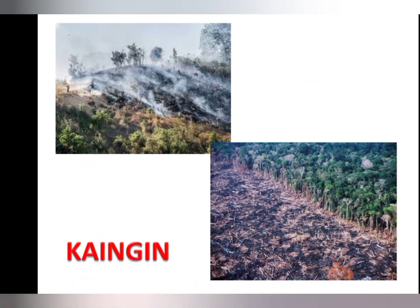Next is the kaingin system. The kaingin system is a means of clearing a forest by cutting down trees and burning them for cultivation purposes. This system is practiced in many parts of the world. Whatever the reason for kaingin, there is a negative effect on the earth's surface, the earth's atmosphere, and on humans as well.